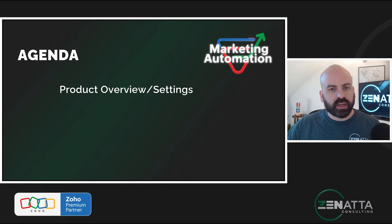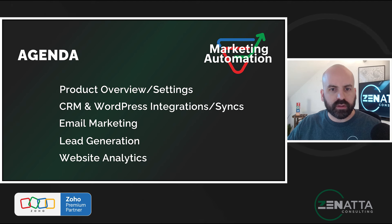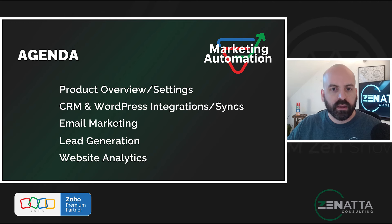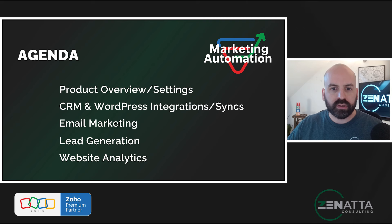So the agenda for this Marketing Automation 2.0 webinar: first, I'm going to dive into the product overview and settings, just a top-down run-through of everything included inside the application. Next, I'll dive into connecting the CRM, connecting the leads and contacts module, and installing the WordPress PageSense plugin you'll need for tracking. After that, we'll look at the email marketing features including topics, segments, campaigns, and journeys, which are essentially workflows. Then we'll look at lead generation tools, and finally website analytics features similar to SalesIQ and PageSense. Let's jump straight into the product overview and settings.